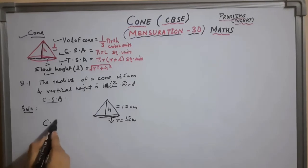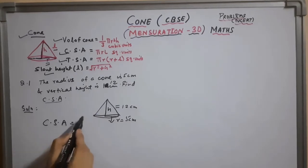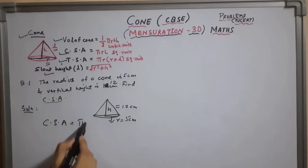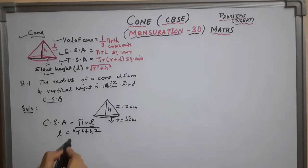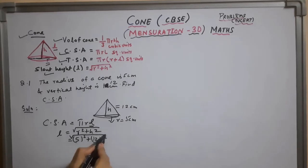We know the formula of the curve surface area, that is pi r l. So before that we have to find l equals square root of r square plus h square. So r is 5 whole square and h is 12 whole square. Taking the square root of this,